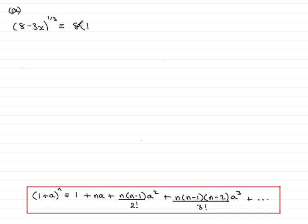8 times 1 will give us the 8 and for the 3x we need to divide by 8. So that would be minus 3x over 8 or minus 3 eighths x. Remember that all of this is to the power of 1/3. So I can put this in square brackets and this is all to the power of 1/3.